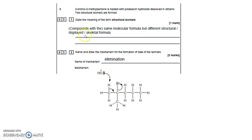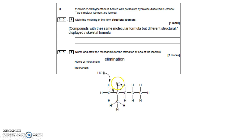Now you need to draw 2-bromo-2-methylpentane. Pentane is 5 carbons in a line — the longest chain is 5, all single bonds. 2-methyl: labelling from the left, carbon 1, carbon 2 — there's the methyl group on carbon number 2. And on the same carbon, 2-bromo — there's a Br on carbon number 2. So carbon 2 has a methyl group and a bromine atom attached.